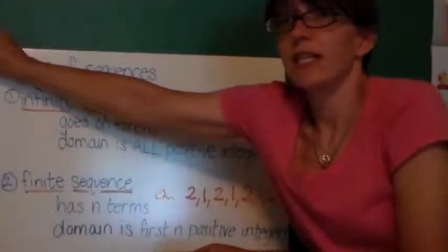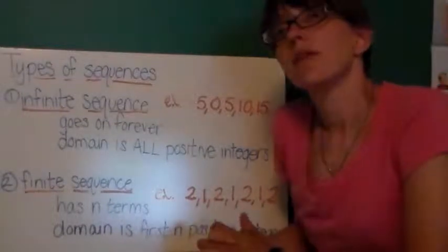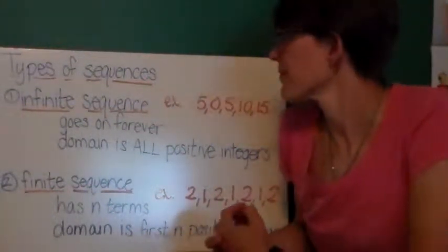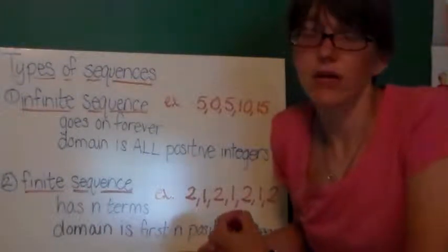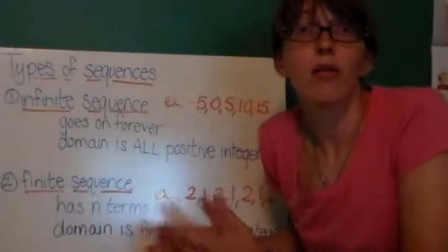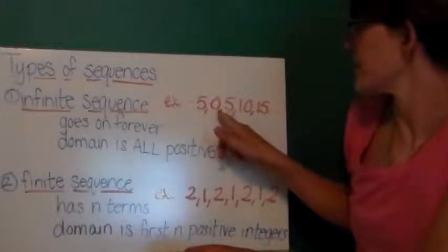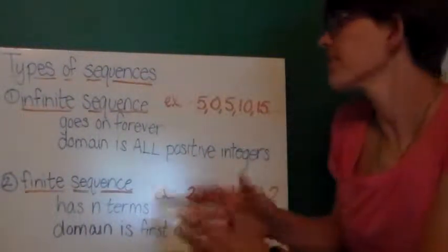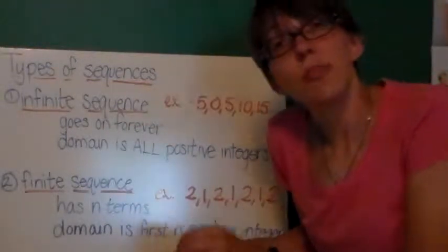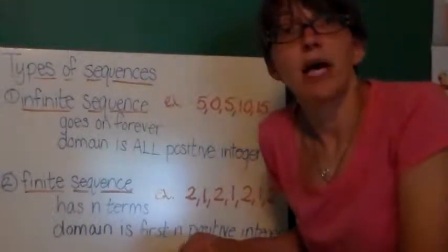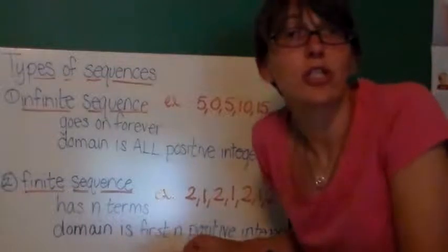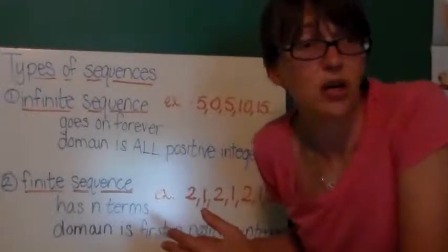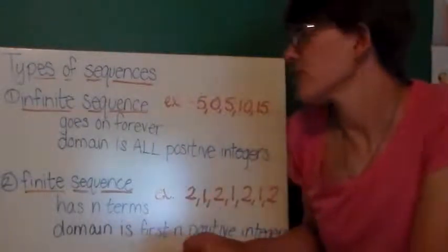Now, there are many different types of sequences. The ones we're going to talk about today are infinite sequences. These infinite sequences are called infinite because they go on forever. An example: negative five, zero, five, ten, fifteen. See, the dot, dot, dot here, it goes on forever. The domain is all the positive integers. Because there's a first term, then a second, then a third, then a fourth, then a fifth, there's a millionth term, a two billionth term. You get the idea.